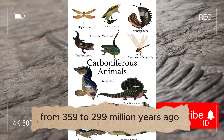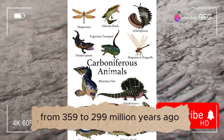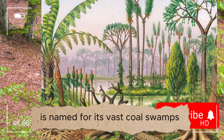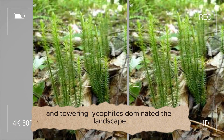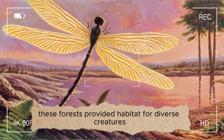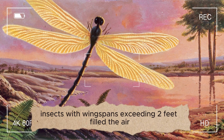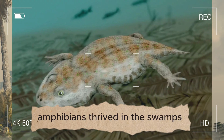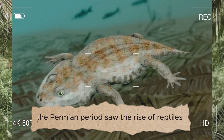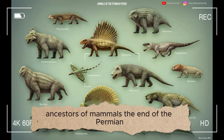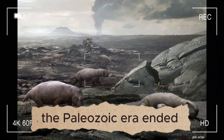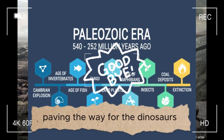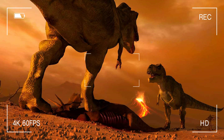The Carboniferous period, from 359 to 299 million years ago, is named for its vast coal swamps. Giant ferns and towering lycophytes dominated the landscape, providing habitat for diverse creatures. Insects with wingspans exceeding two feet filled the air, and amphibians thrived in the swamps. The Permian period saw the rise of reptiles, ancestors of mammals. The end of the Permian marked the largest mass extinction event of the Paleozoic era, paving the way for the dinosaurs.